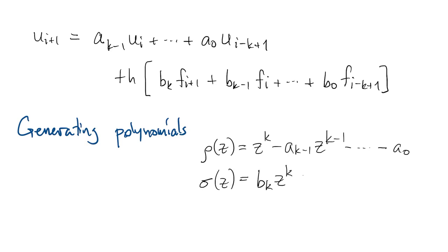So if we know rho and sigma, then we know all these constants, and then we can write out the full method.